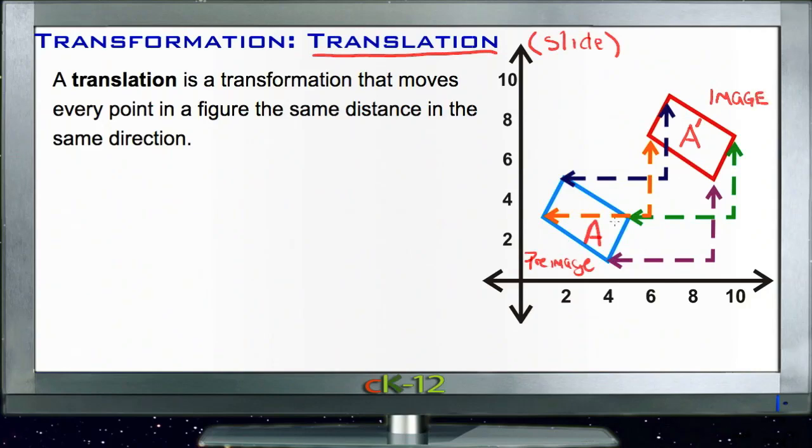So our pre-image is what happens to the figure before we apply whatever changes we're going to apply, and then the image is what we call it after we've made those changes. Sometimes we'll call it by a name and then that same name prime, which really means the same thing, it's just another way to notate it.